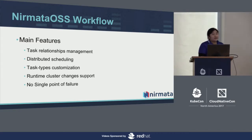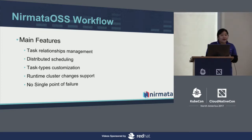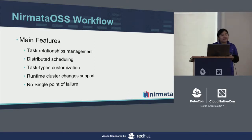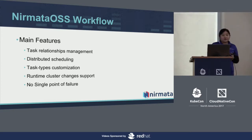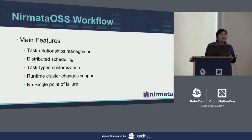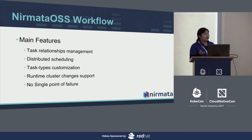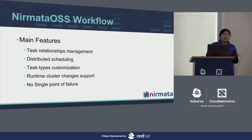Here are some main features of the workflow library. It is capable of managing task relationships, mainly task dependencies. It can schedule tasks in a distributed environment, and the task type can be customized. It also provides good support for fault tolerance — for example, if anything goes wrong during task execution such as your service restarting or your Zookeeper cluster changing state, the task execution will be resumed.